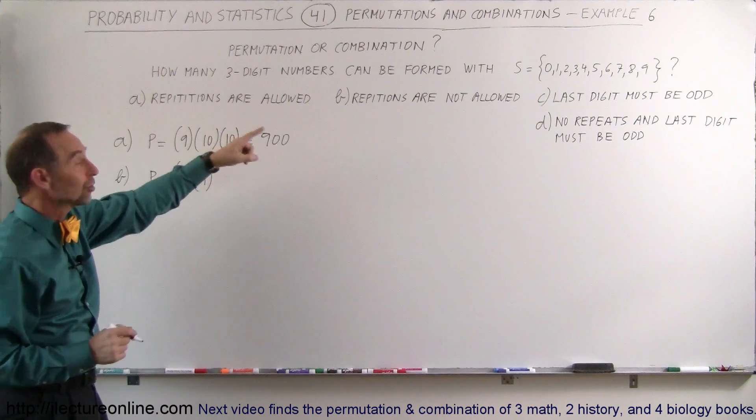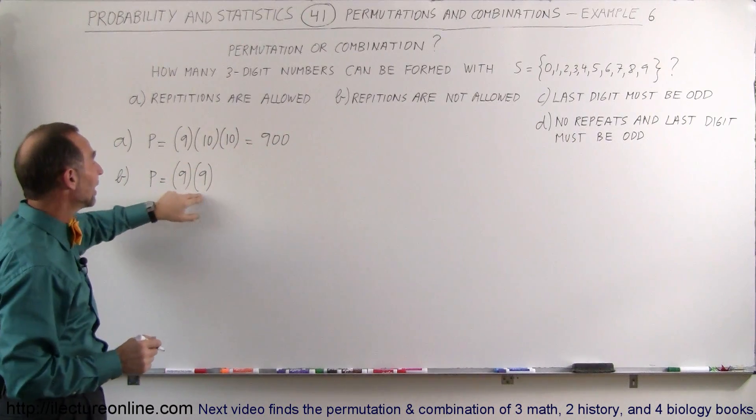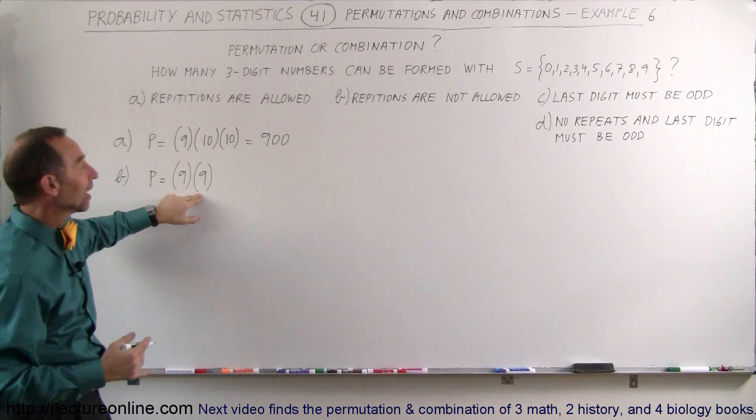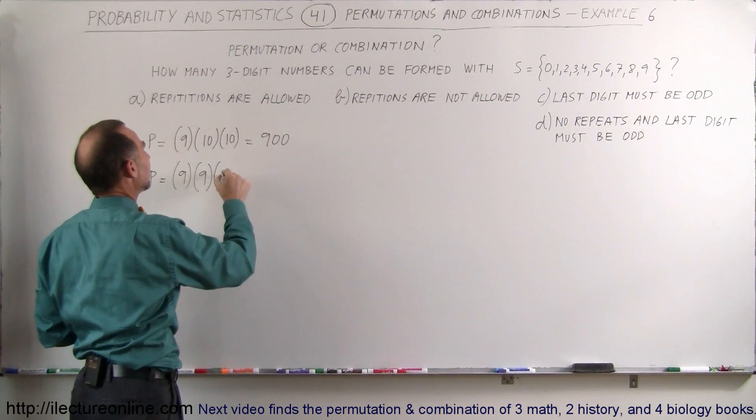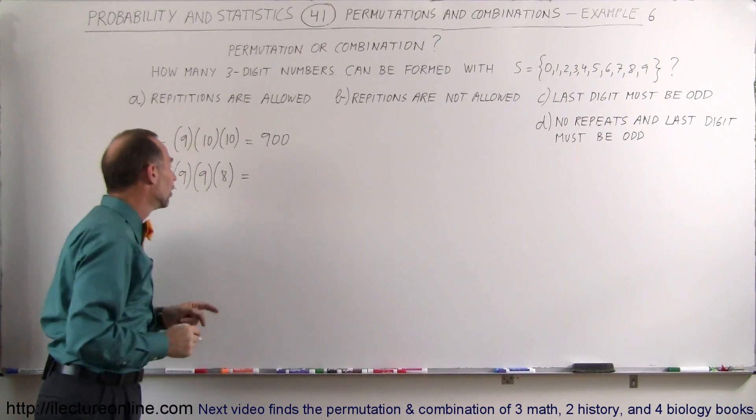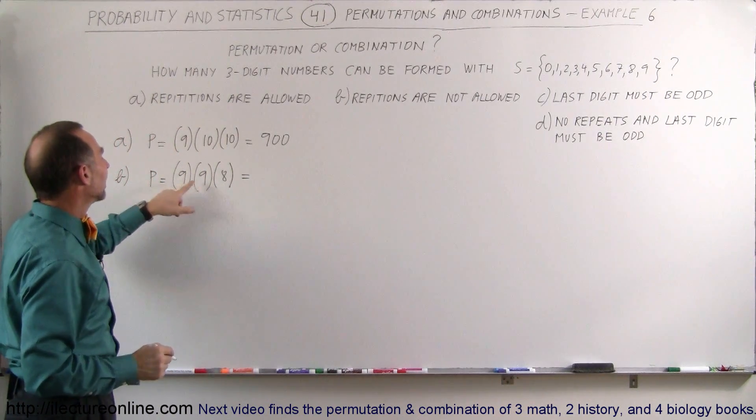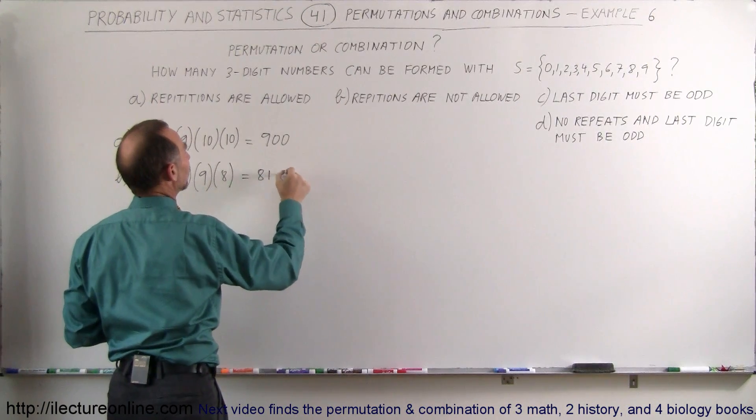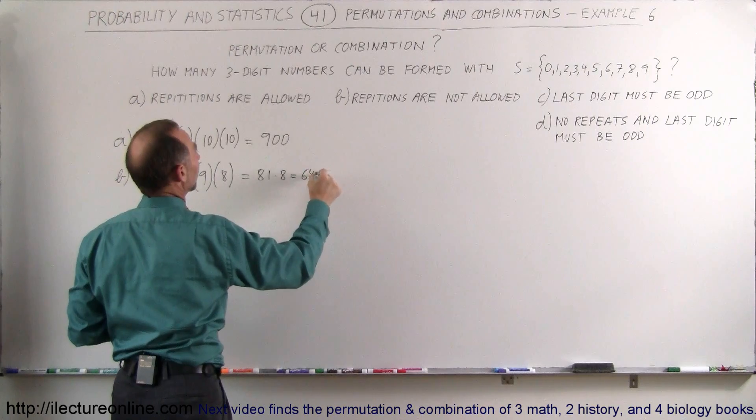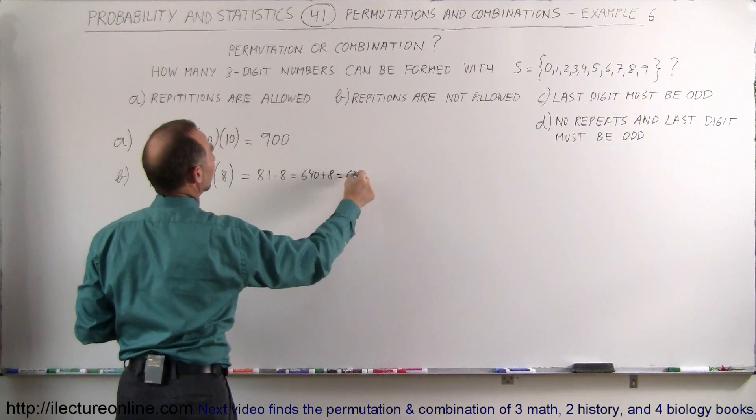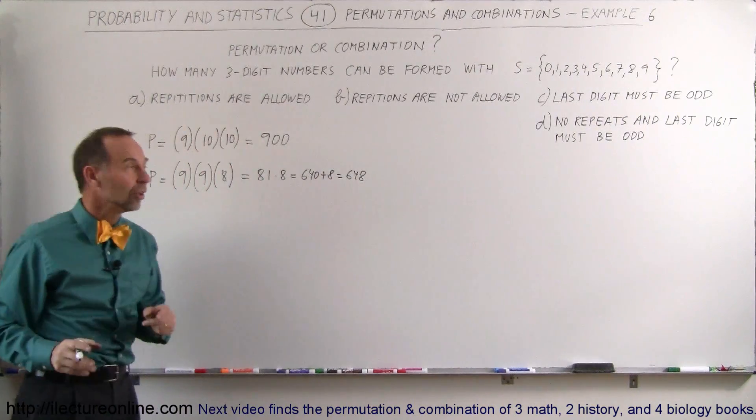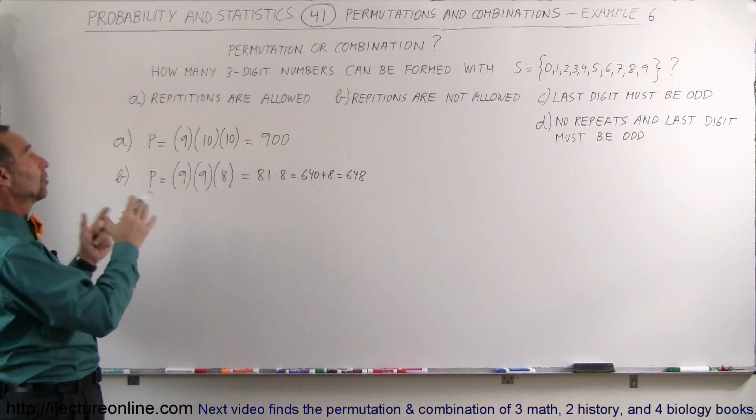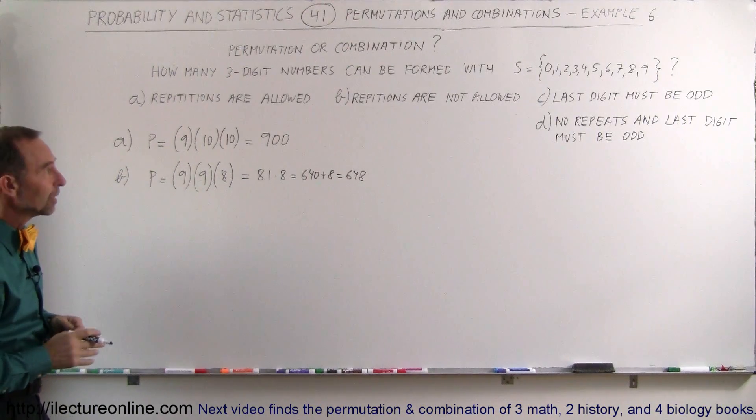And now since you picked two digits which cannot repeat, so two numbers are already taken, there's now only eight numbers left and so therefore you can only put eight different possibilities for the third digit. So in this case you have 9 times 9 which is 81 times 8. So that's 81 times 8 which is equal to 648 permutations with three numbers coming up with a three-digit number when you cannot use repeats.